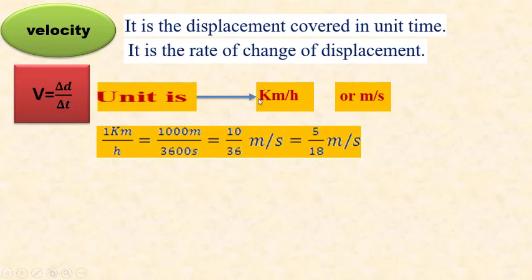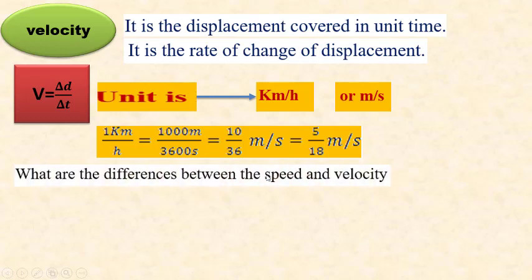We can convert the unit from kilometers per hour to meters per second by using the rule: multiply by 5 over 18.